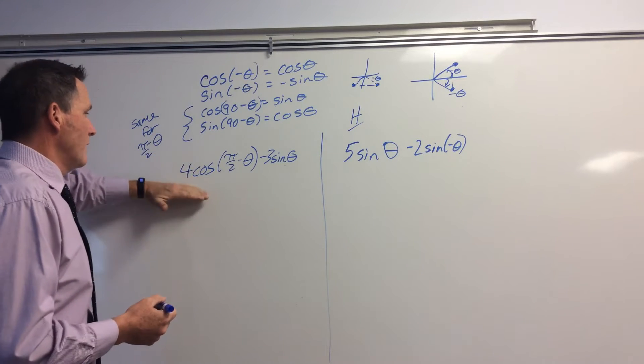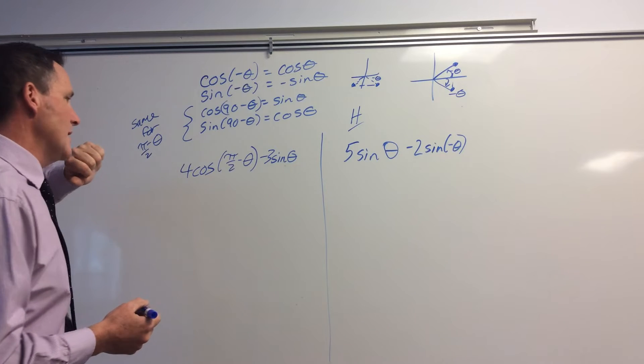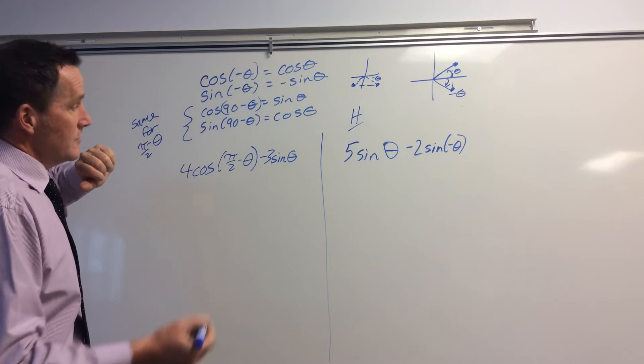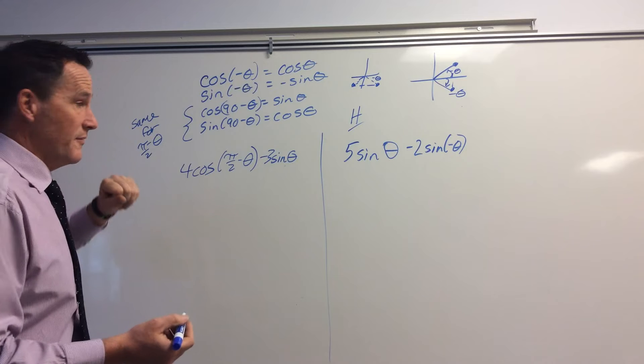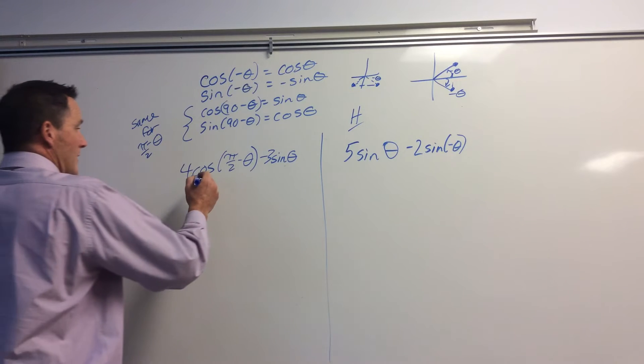The first one we're going to look at, 4 cosine pi over 2 minus theta, minus 3 sine theta. Well, to simplify this, it would be to change this.